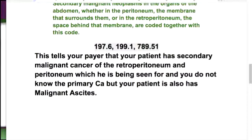If 789.51 is why they're being seen, there is still a guideline that tells you to code the cancer first — which is 197.6. So 789.51 is not going to be listed first because the guideline tells you not to do that.